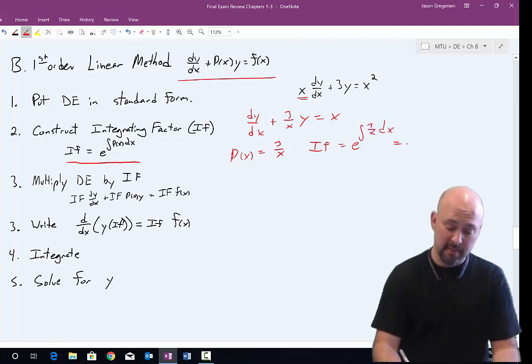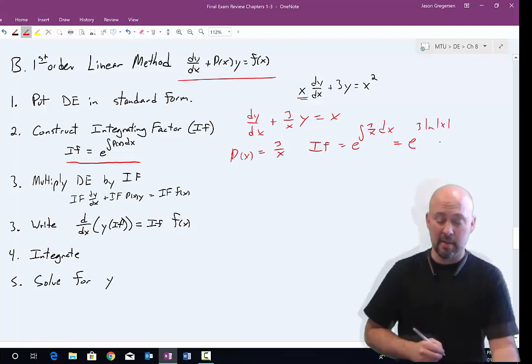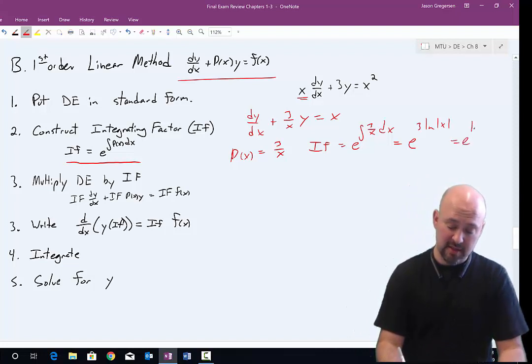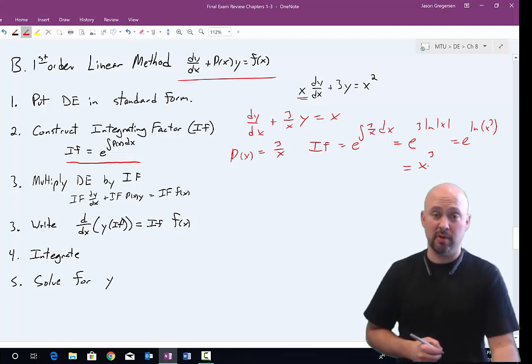And then I need to do the integration. So in this case, I will pull out my factor of 3. I'll be integrating 1 over x, which will be the natural log of the absolute value of x. Then I'll use some of my log properties to rewrite this as e raised to the natural log of x cubed. And then e raised to the natural log of something is just that something. So it looks like I get an integrating factor of x cubed.